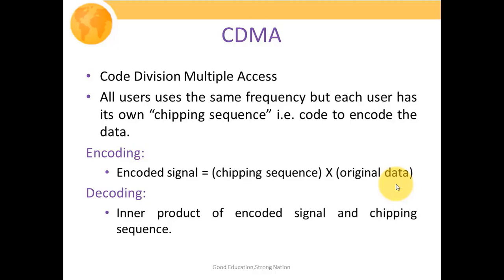For decoding, we compute the inner product of the encoded signal and the chipping sequence. We decode the encoded signal with the help of its own chipping sequence by performing inner product multiplication with the same chipping sequence.